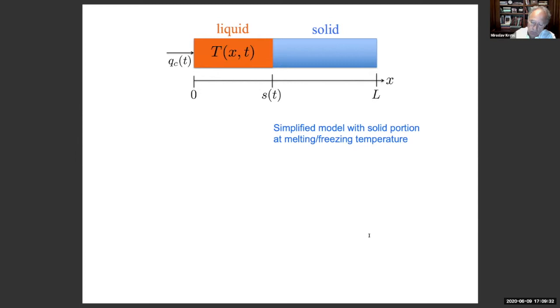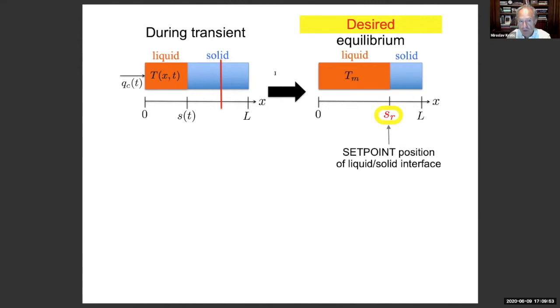To start simple and clear, I will assume that the temperature in the solid is all at the melting or freezing temperature. In other words, I will not consider the dynamics in both phases, but only in the liquid phase. I will come back to both phases a little later. What is the control objective? The control objective is to regulate this interface position S of T to a desired position. In other words, to melt just the desired amount of solid and place the interface at the reference point SR.